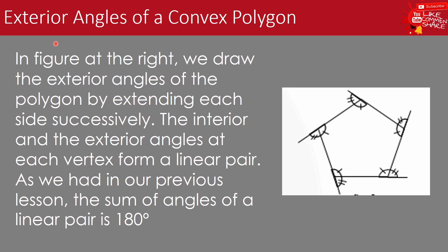Now let us talk about exterior angles of a convex polygon. In the figure, we draw the exterior angles of the polygon by extending each side successively in one direction — counterclockwise. We extend each side of the polygon, and the interior and exterior angles at each vertex form a linear pair. This means that the sum of the interior and exterior angles at each vertex is equal to 180 degrees.